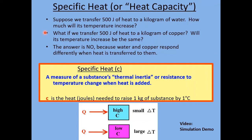We want to be able to figure that out, and that's one of our goals in this section. But another question is: what if we transfer this same 500 joules of heat to a kilogram of copper instead of water? Obviously the copper is going to heat up as well and its temperature is going to rise. But will its temperature increase be the same as the water? The answer is no, because water and copper respond differently when heat is transferred to them.